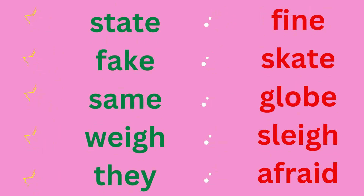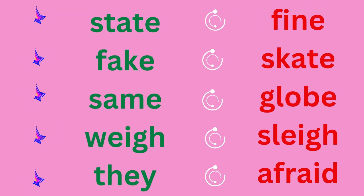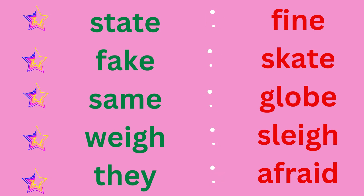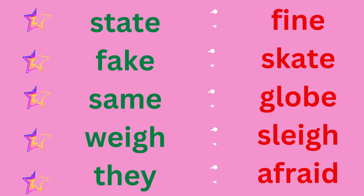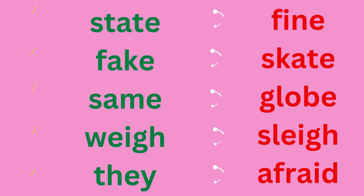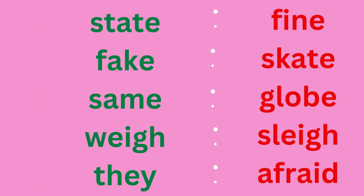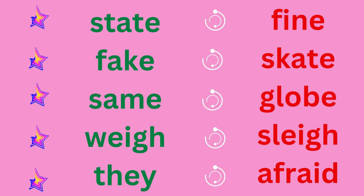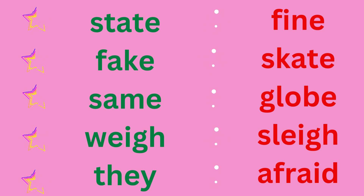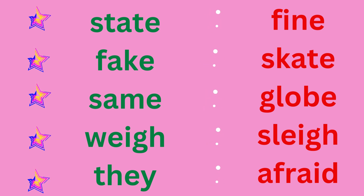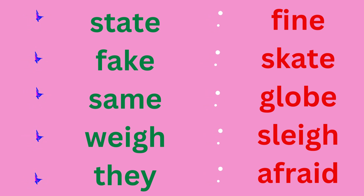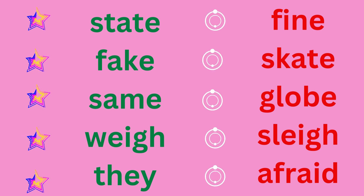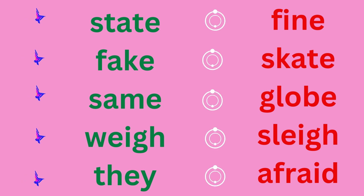Green column: State — S-T-A-T-E, state. Fake: F-A-K-E, fake. Same: S-A-M-E, same. Way: W-E-I-G-H, way. They: T-H-E-Y, they.